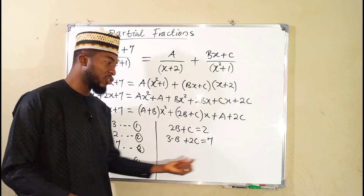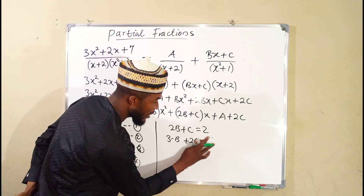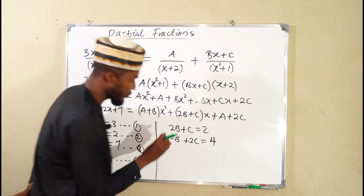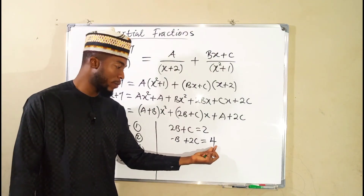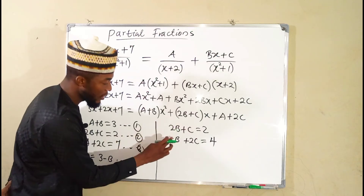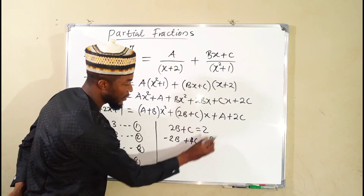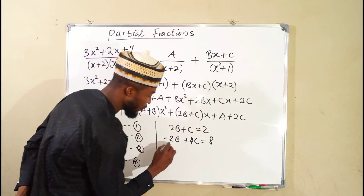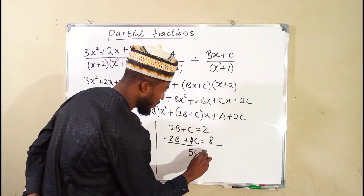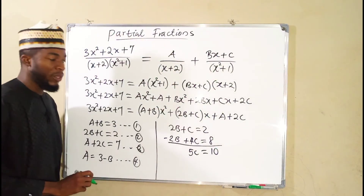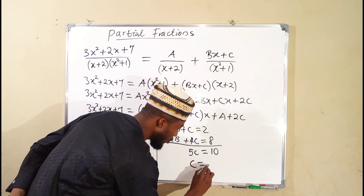We take the positive 3 to the right by subtracting 3 from both sides, giving minus b plus 2c equals 4. To solve simultaneously, we can multiply equation 2 by 2, which gives 4b plus 2c equals 4... wait — we use the equations together: multiplying to eliminate b. Adding the two equations: b terms cancel, 5c equals 10. Dividing both sides by 5, c equals 2.